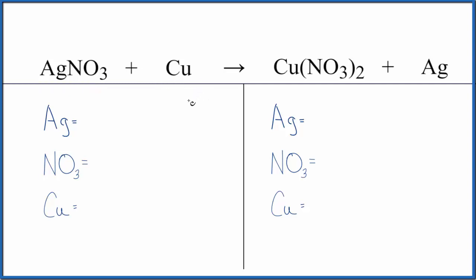So let's talk about the type of reaction. On this side we have silver that's bonded to the nitrate, and copper is all by itself. On this side over here, now the copper is with the nitrate, and the silver is all by itself. So the copper has replaced the silver. This is a single displacement reaction.